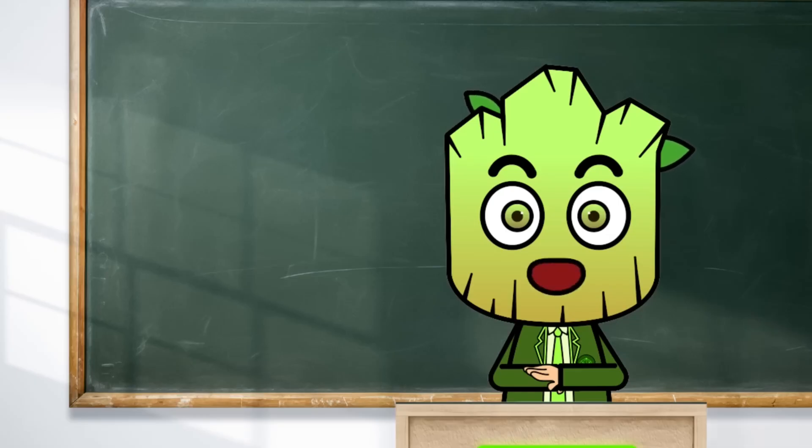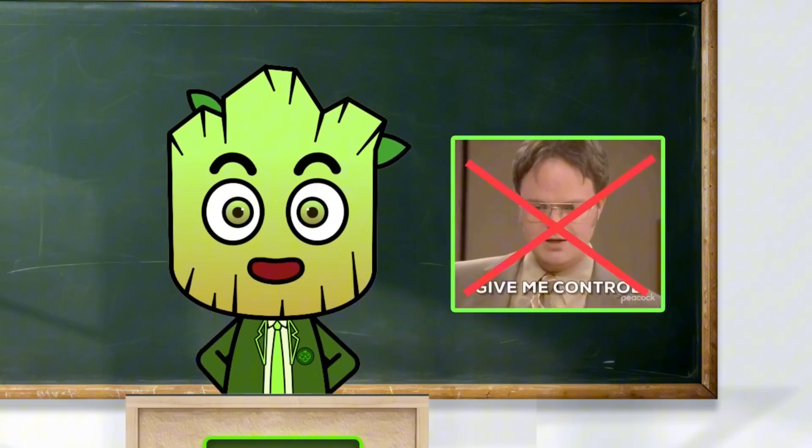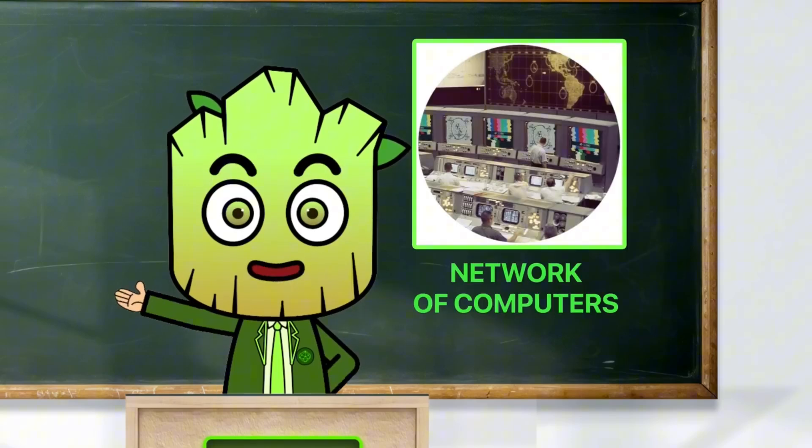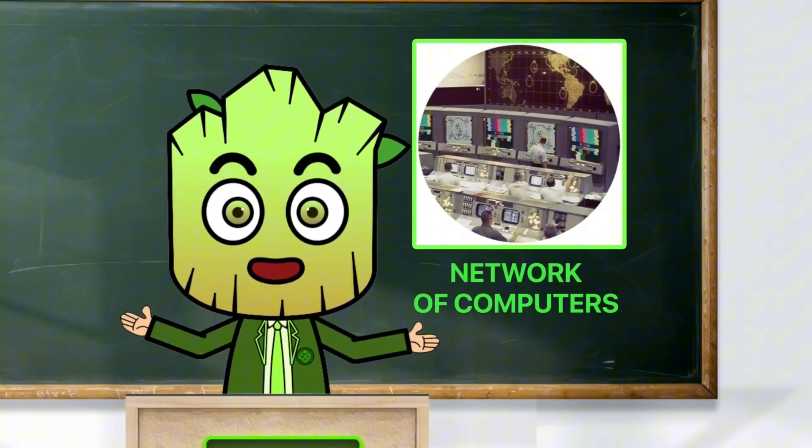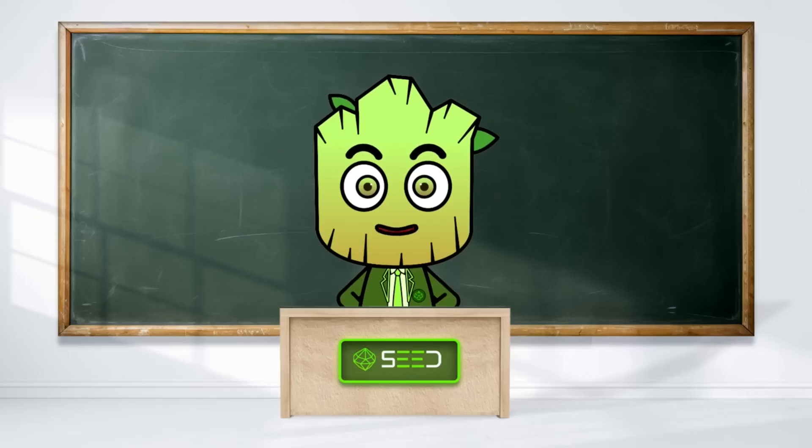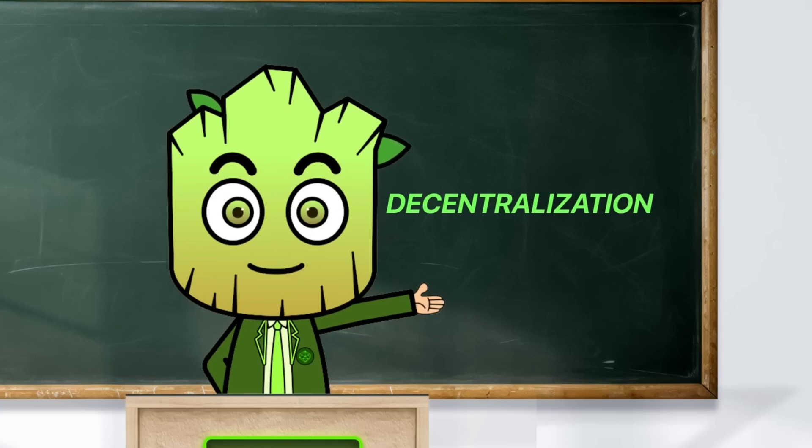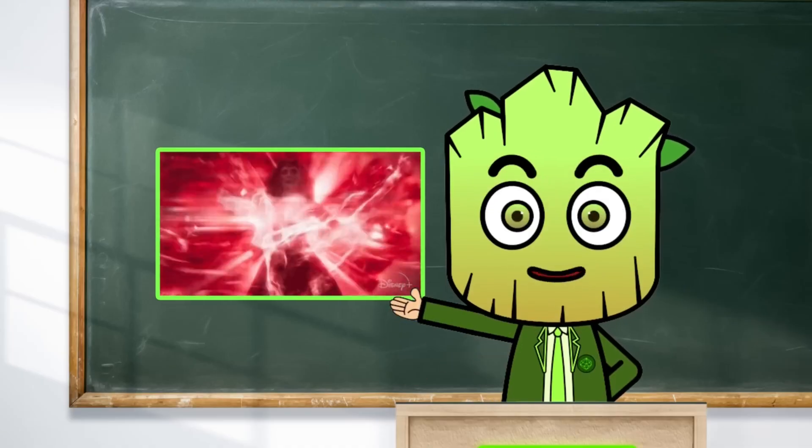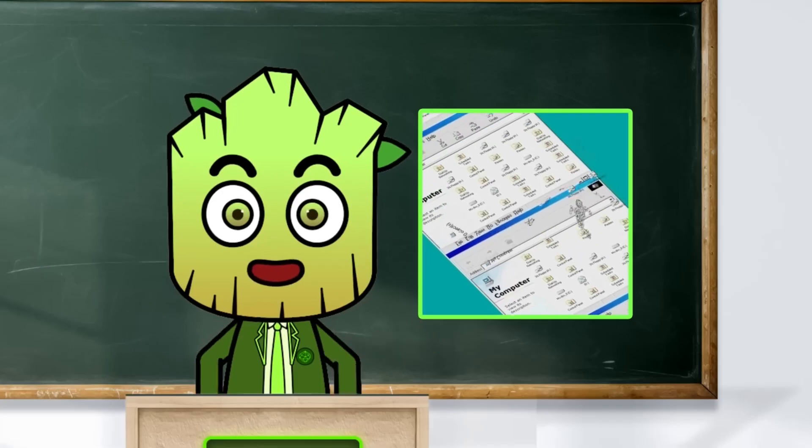Here's another cool part. There's no boss. In the blockchain world, no single person or company controls the whole thing. Instead, a network of computers all over the world work together to keep everything running smoothly. So no one can go, 'Hey, I'm the boss now,' and mess things up. This is called decentralization, and it's one of the reasons blockchain is so powerful. It means there's no single point of failure. If one computer goes down, the others keep things going.